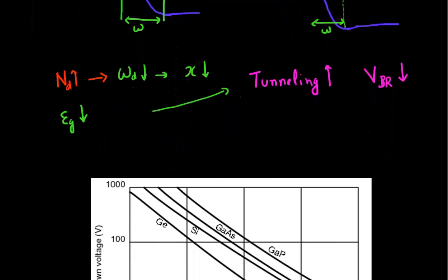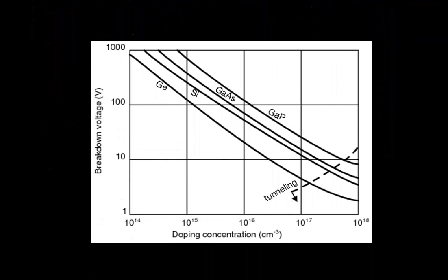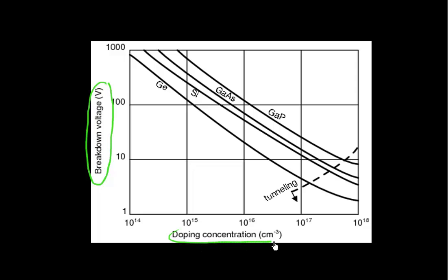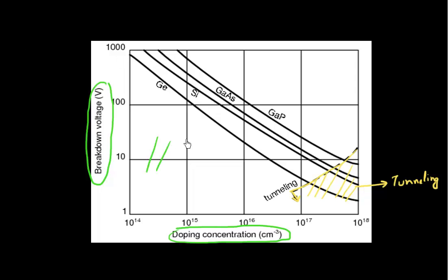So let's look at some experimental data. Plotted here is the breakdown voltage as a function of doping concentration. Both processes are shown — this breakdown phenomenon could happen either by an avalanche mechanism or by a tunneling mechanism. If you go to higher doping concentrations, you see that tunneling dominates. So if you go to doping concentrations higher than a certain value, these breakdown voltages are in fact limited by tunneling. On the other hand, if you have low doping, the other process — avalanche — dominates that region.